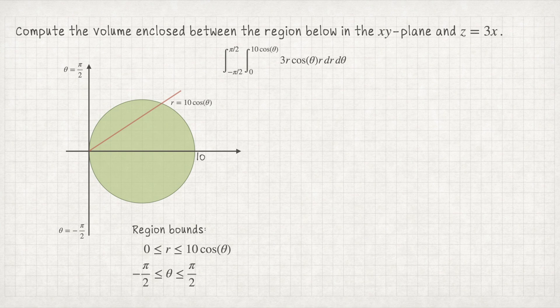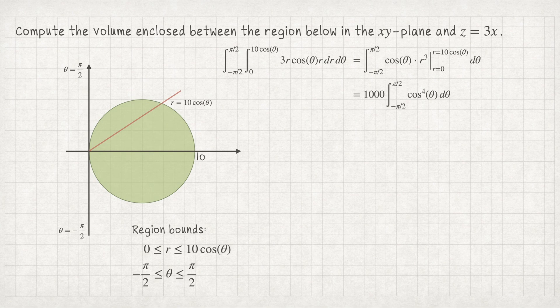Integrating with respect to r, we have 3r² cosθ, whose antiderivative gives r³. Plugging in the bounds, the bottom gives 0 and the top gives 10³ = 1000, yielding 1000 times the integral from −π/2 to π/2 of cosθ · cos³θ = cos⁴θ dθ. The integrand is even symmetric — a quantity raised to an even power — so the integral from −π/2 to π/2 equals twice the integral from 0 to π/2.